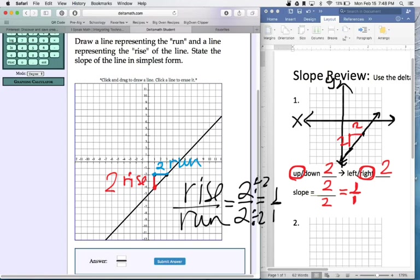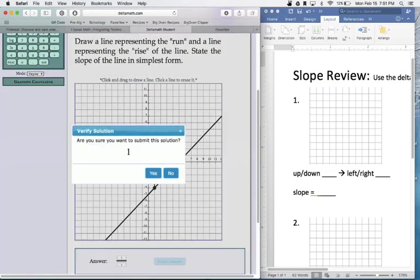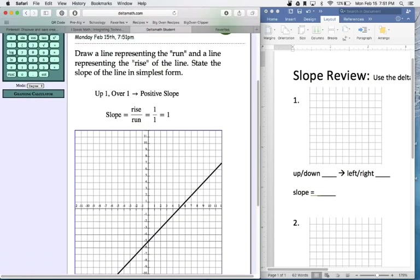And then what we're going to do is we're going to put our answer as one over one. You'll see all the writing disappeared. So I have my slope triangle drawn and I have my one over one. I'll hit submit answer. It says are you sure you want to submit the solution and I say yes. It tells me I'm correct. And it shows me up one over one positive slope. Slope equals rise over run one over one.